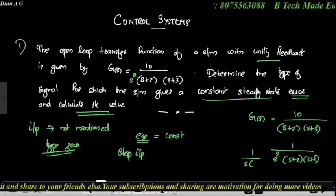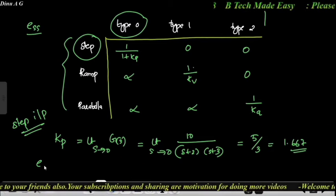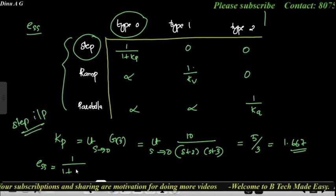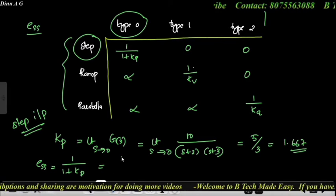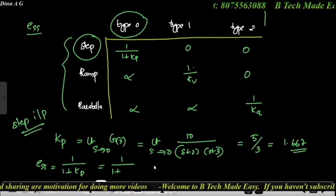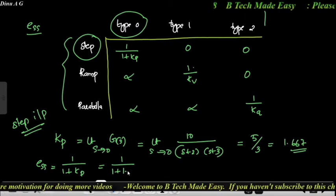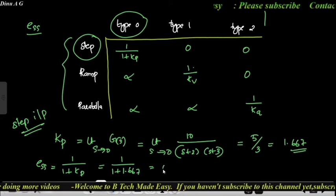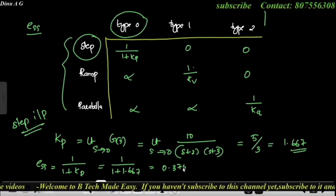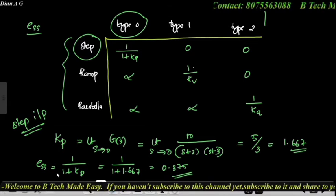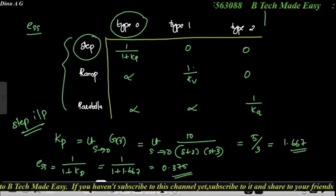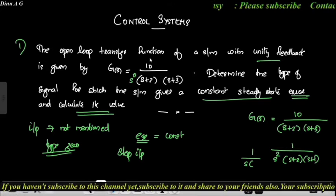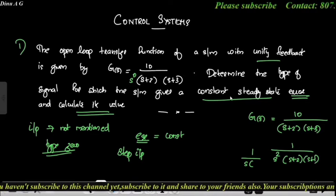Steady state error ESS = 1/(1 + Kp) = 1/(1 + 1.667) = 0.375. This is the corresponding ESS value — a constant steady state error.